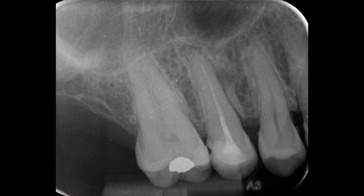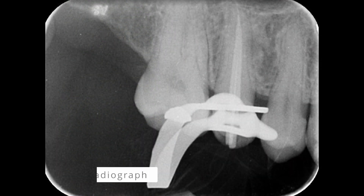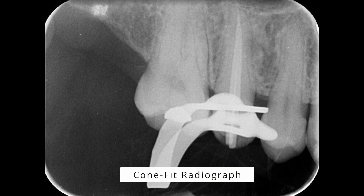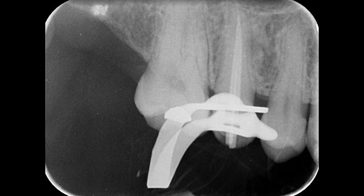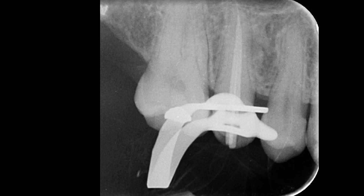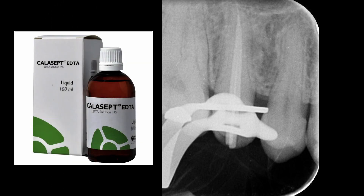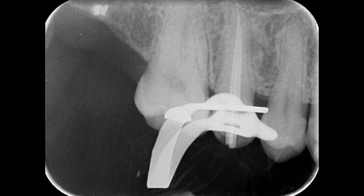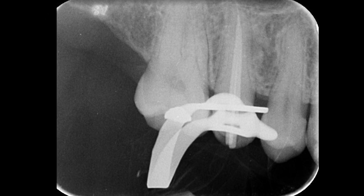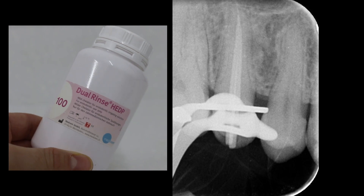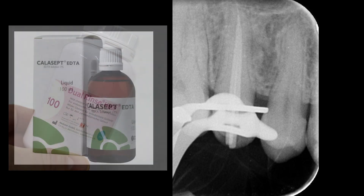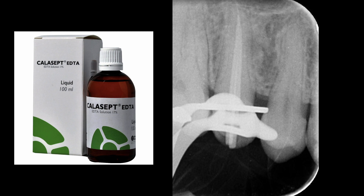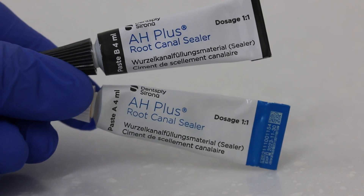I then irrigated lots and lots with 2% sodium hypochlorite and took the working radiograph — I'm actually really happy with this. After the sodium hypochlorite, I used 17% EDTA solution from Calisept. There is some talk in the endodontic community regarding what we should be irrigating finally with — some favour HEDP sealing material — but with this case I used the 17% EDTA solution as the final rinse and used paper points to wick out the remaining solution.